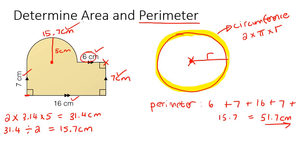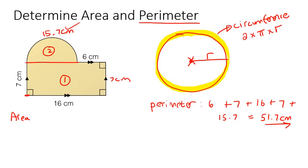Now we need to do the area. So to work out the area, you need to divide the shape up into shapes that you already know. So for example, what we can see is that we've got a rectangle and a half circle. So we'll call this part one and we'll call this part two.